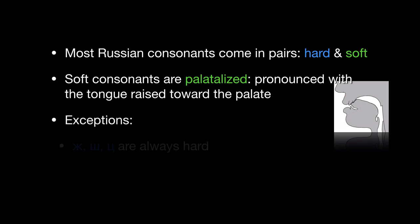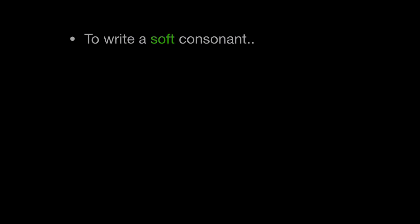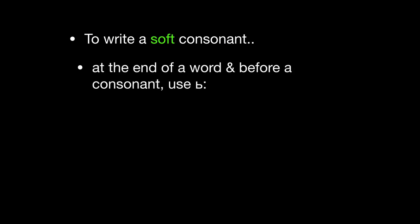A few exceptions: Ж, Ш, Ц are always pronounced hard. Щ, Ч are always pronounced soft. To write a soft consonant at the end of a word or before another consonant, use the мягкий знак, the soft sign.